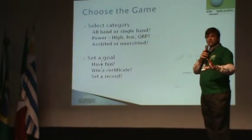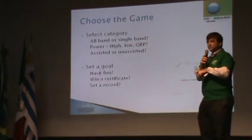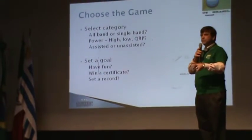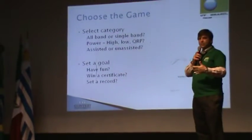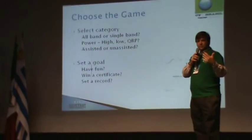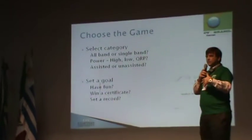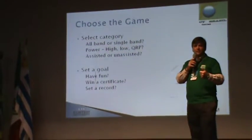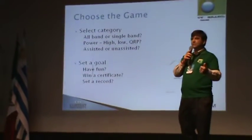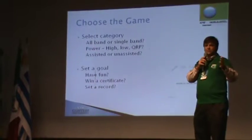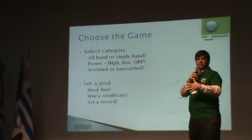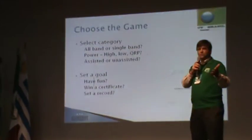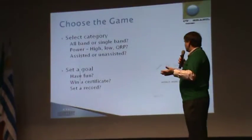As you look at past scores and understand how the contest works, consider the different categories available — single operator assisted or unassisted, single band, or multi-operator. Look at your station: do you have antennas for all bands or just one? Look at the competition in your area. Maybe on 15 meters there's always a big station that wins, so you should try a different category — low power instead of high power, or 10 or 20 meters, or all bands. You get to choose the game, and that's the most important thing.